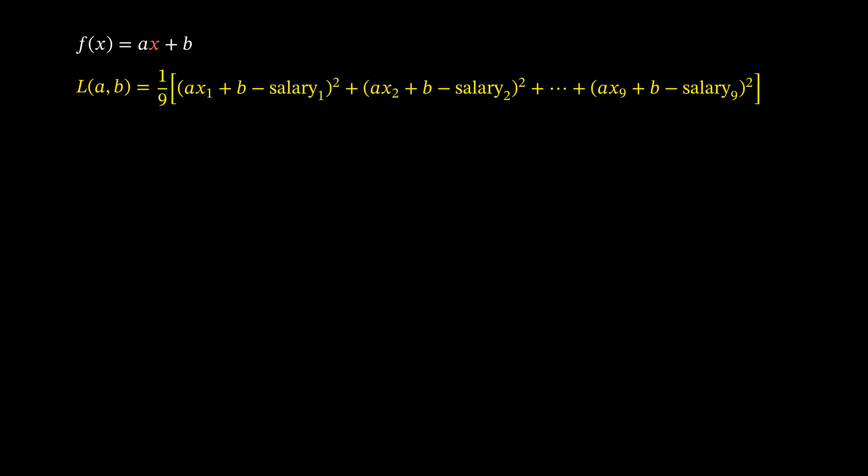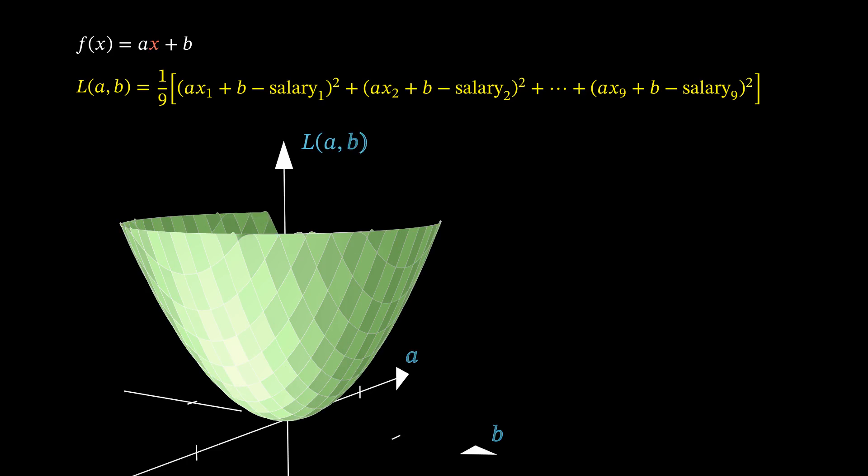To find the minimum of this function, you can use the algorithm called gradient descent. The idea is simple: you start at a random point, and then you keep moving in the direction that decreases the function the fastest. This direction is given by the negative of the gradient, which is a vector of all partial derivatives of the function.